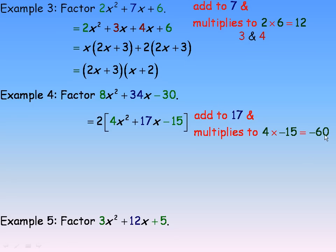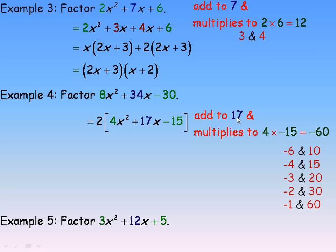When the numbers start to get fairly big, you might want to write down the factors of negative 60. Notice they're multiplying to a negative, so one is negative and one is positive. They're adding to positive 17, so the larger number has to be positive. The only pair of numbers that add to positive 17 is negative 3 and 20 — nothing else adds to 17, even though they all multiply to negative 60. So we rewrite this, and don't forget your common factor of 2 — that stays right through to the end.